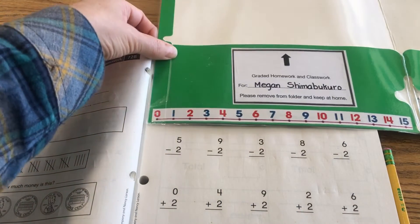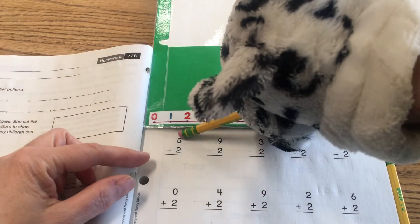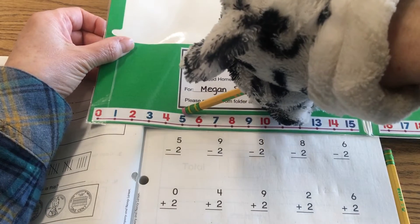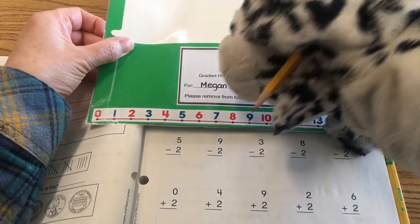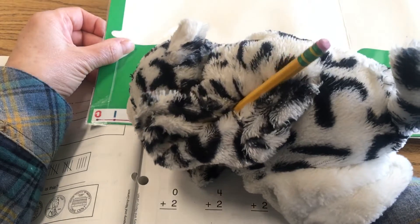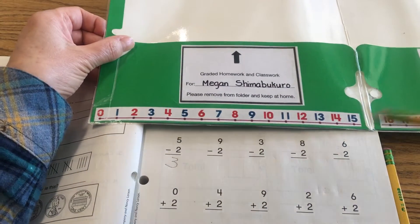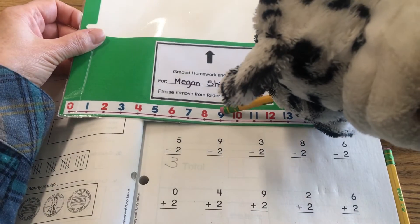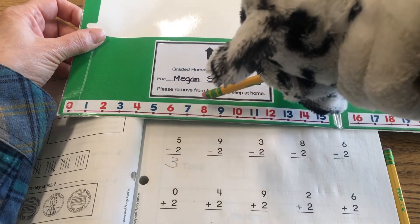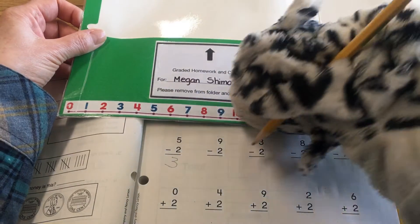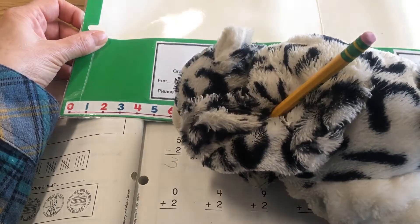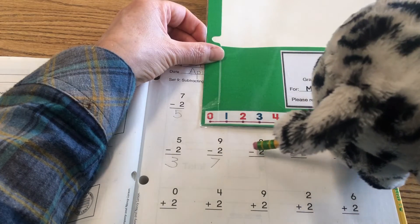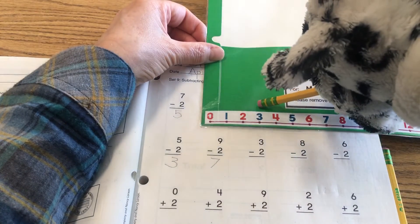The next problem: two minus two. Start at the two, jump two spaces towards zero — one, two — two minus two equals zero. Next row: five minus two. Start at the five, jump two spaces — one, two — five minus two equals three. The next problem is nine minus two: start at the nine, jump two spaces towards zero — one, two — nine minus two is seven.